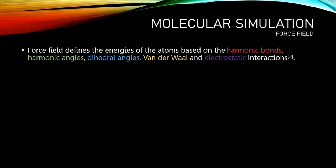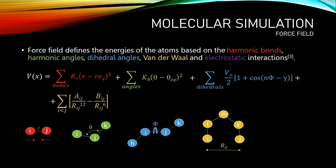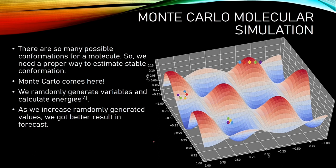So, after explaining energy minimization for a simple function, we can go to the potential energy calculation for molecules. In the context of molecular modeling, a force field, or potential energy, defines the energies of the atoms based on the harmonic bonds, harmonic angles, dihedral angles, van der Waals, and electrostatic interactions. So, this is potential energy function for molecules. So far, I explained Monte Carlo, calculation of minimum potential energy for simple harmonic oscillator, and potential energy function of molecules.